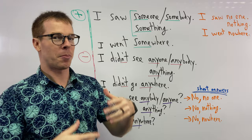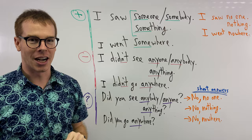This first one, you see the word 'some', right? We have this word, we have someone, somebody, something, somewhere.